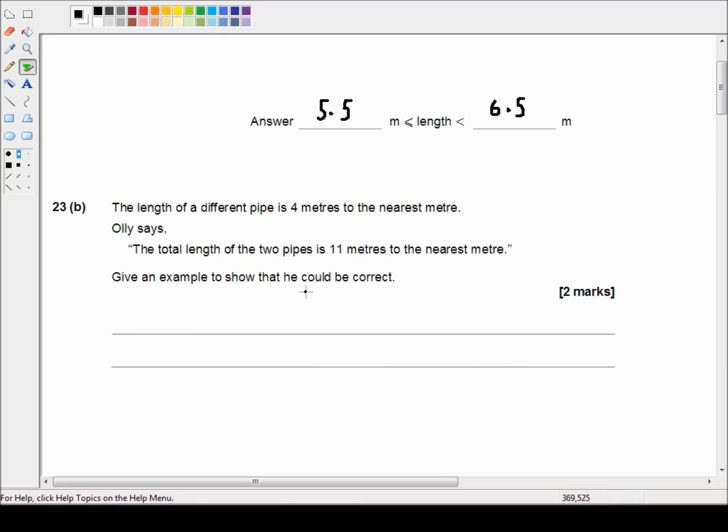Okay so the error interval for four meters is the same as 3.5 meters less than or equal to four meters less than 4.5 meters.